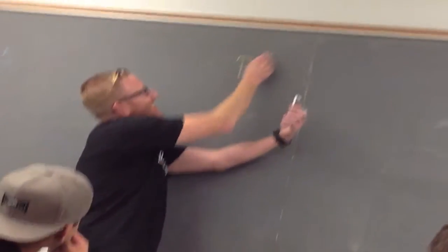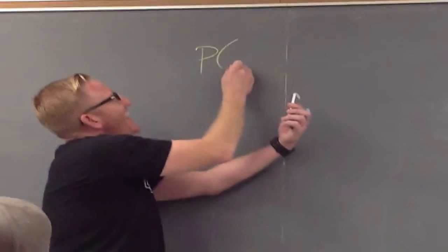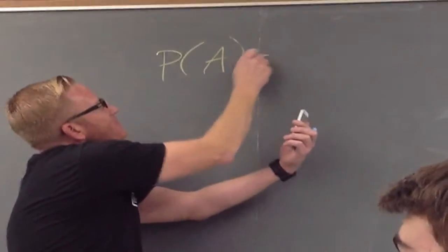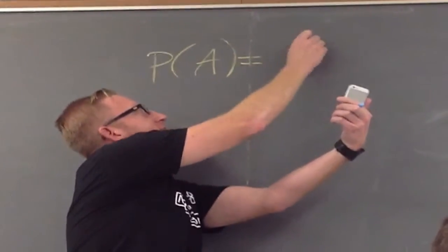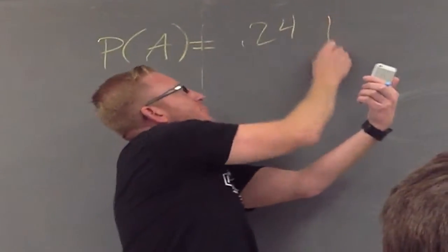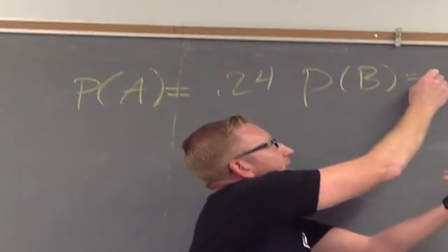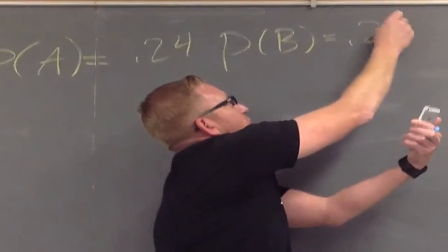So, what did they do? They gave the probability of A. What was the probability of A? 0.24. And then they said the probability of B. What's that? 0.28. Great.